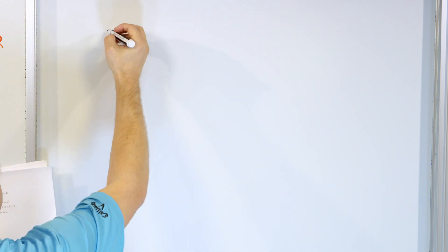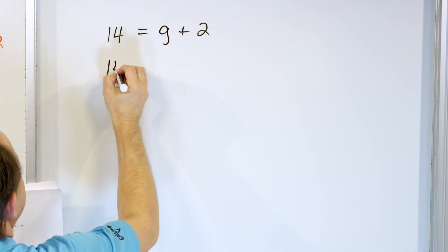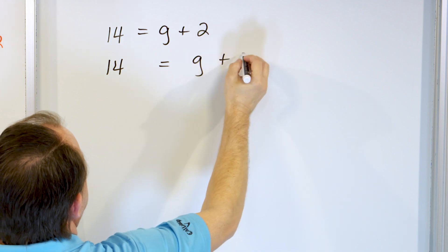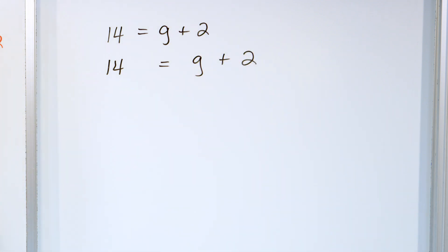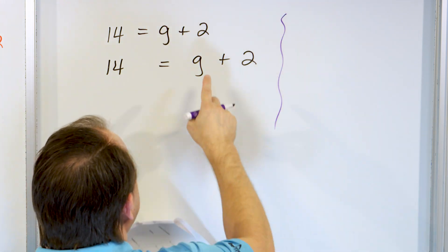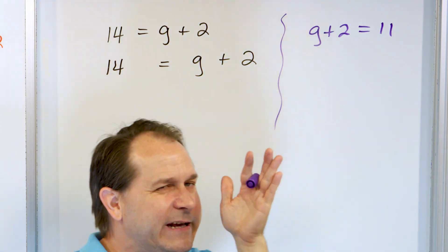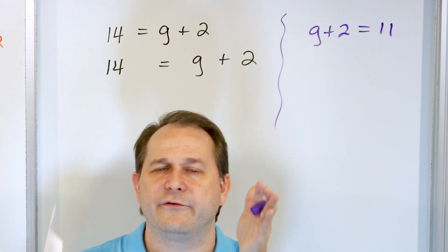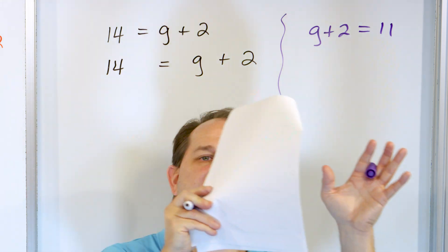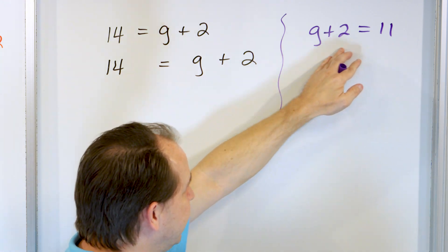Two main rules of equations: do the opposite operation and always try to get the variable by itself. What about 14 equals g plus 2? Rewrite the equation. Now, notice that g is on the right-hand side of the equation. I want to stop and say that if I wanted to, I could flip the whole thing around and make it g plus 2 equals 14, because an equal sign is like a mirror — all you're saying is both sides are equal to each other. So I can do that — it's perfectly fine. If it helps you, do it like this, but you don't have to.